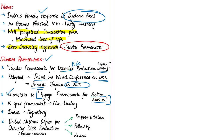The Sendai Framework is a 15-year framework with a non-binding agreement, meaning signatory countries will attempt to comply on a voluntary basis and not on compulsion. This framework recognizes that the state has the primary role to reduce disaster risk, and that responsibility should be shared with other stakeholders including local government, private sector, and other stakeholders. India is a signatory to this framework even though compliance is voluntary.